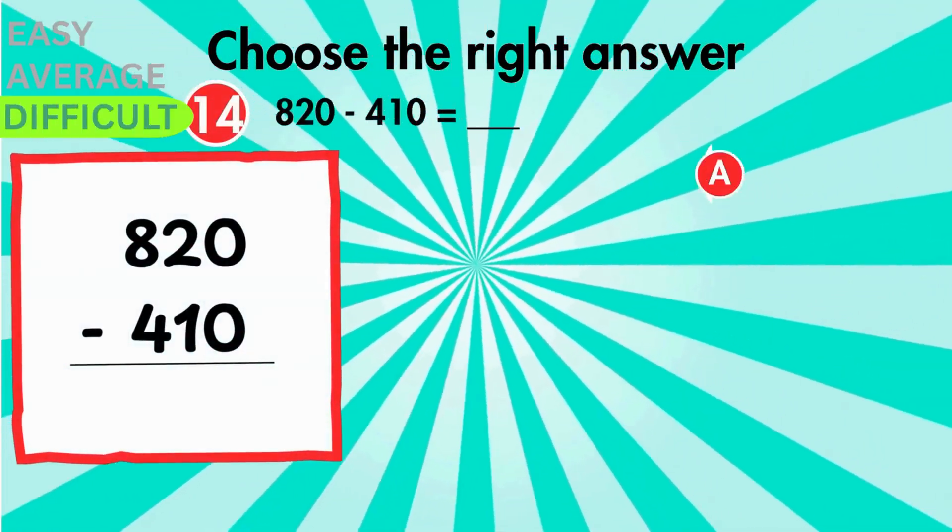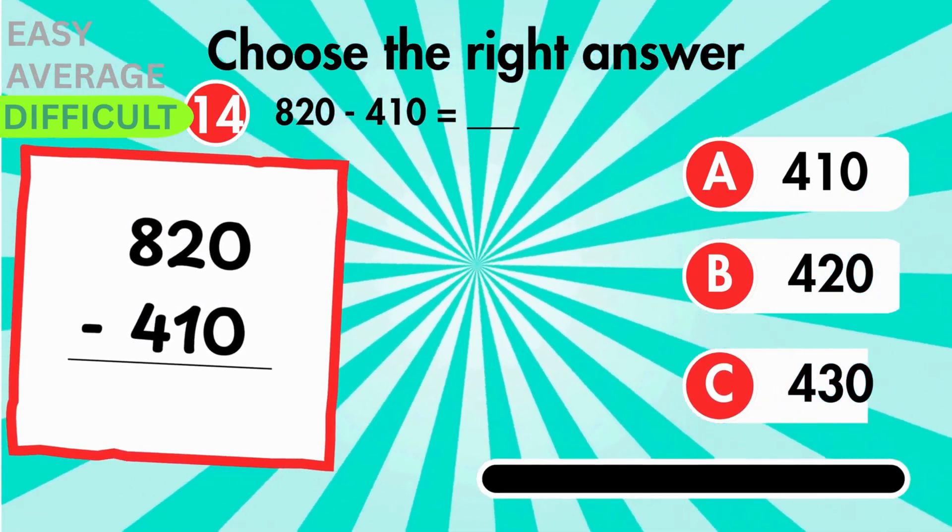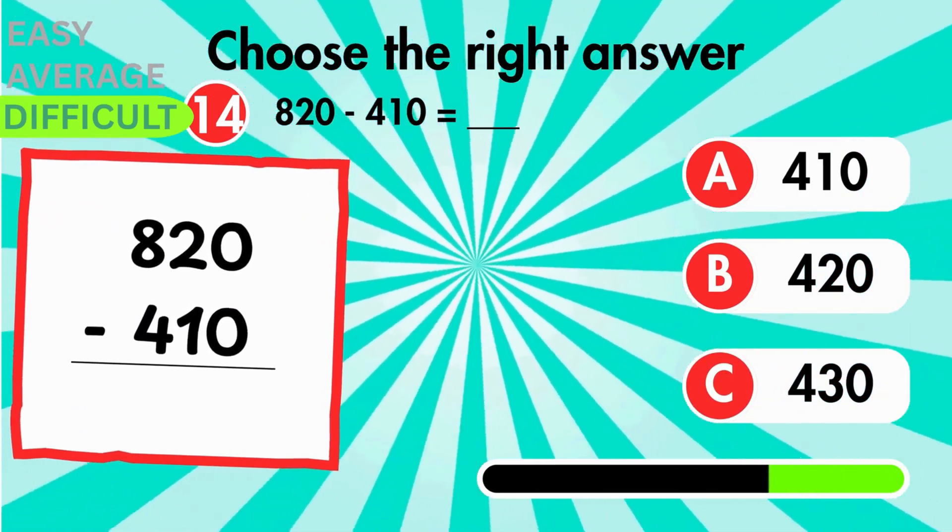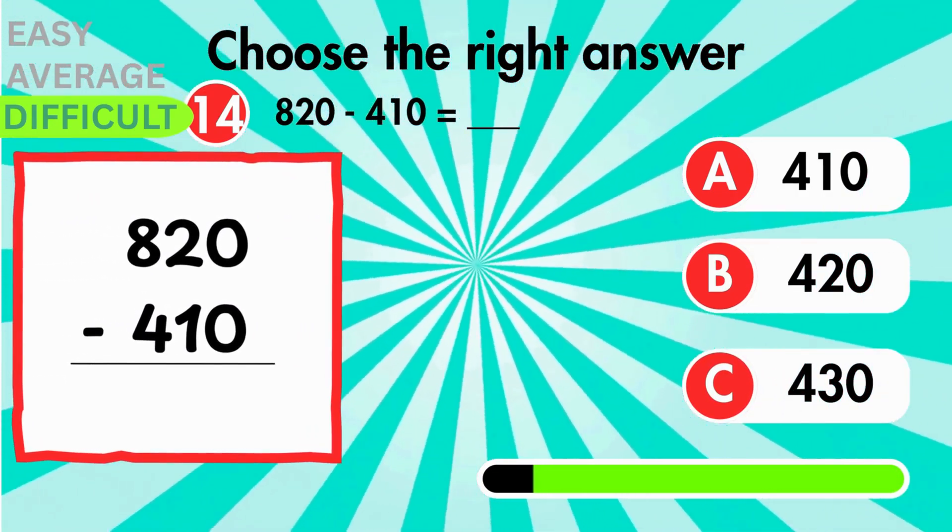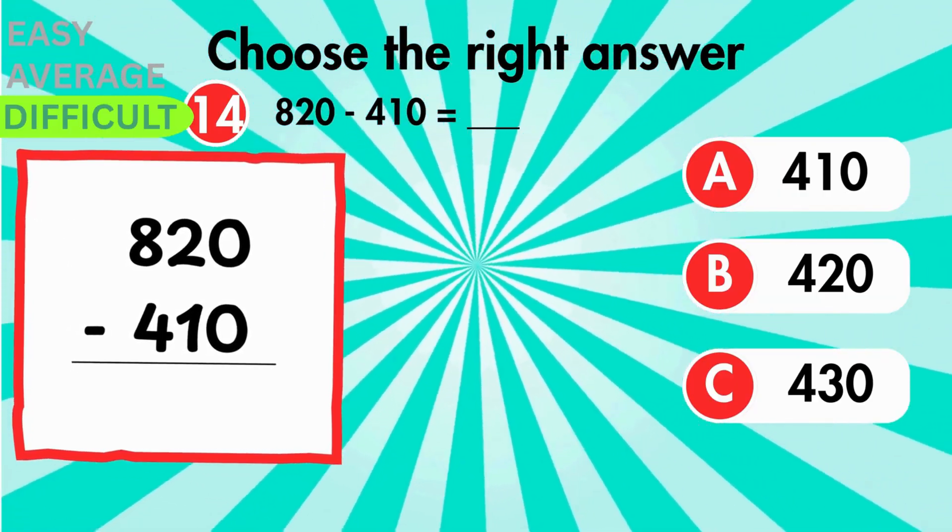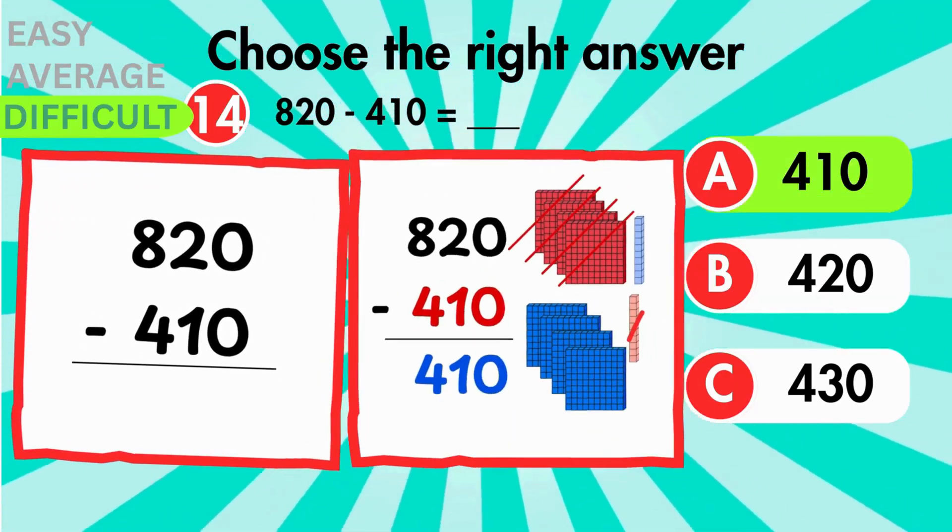Subtract 410 from 820. How many remain? You'll have 410 left.